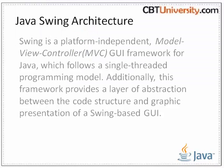Java Swing architecture — MVC: Model-View-Controller. It is a framework for Java which follows a single-threaded programming model. Additionally, this framework provides a layer of abstraction between the code structure and the graphic presentation of Swing-based GUI. The Swing library makes use of the MVC software design pattern, which conceptually decouples the data being viewed from the user interface controls through which it is being viewed. The JTable has a model called TableModel that describes an interface for how a table would access the table data, and a default implementation of this operates on a two-dimensional array.